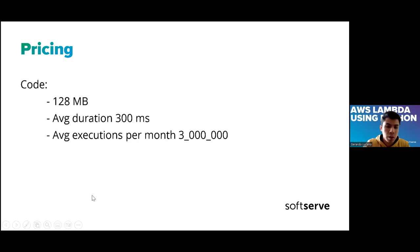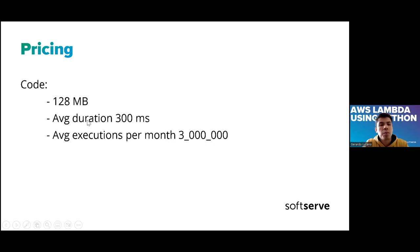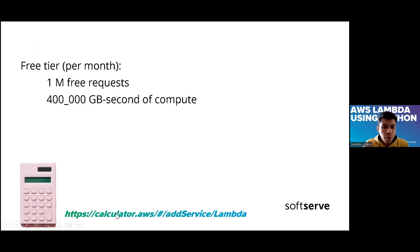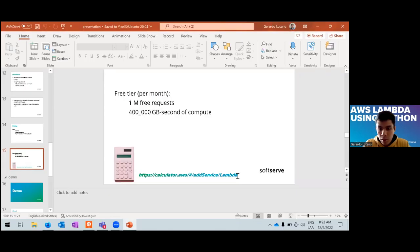Let's see the pricing. We want to make an example deploying code with 128 megabytes of size. Our code runs an average duration of 300 milliseconds, and our executions per month average a large number. We can use the AWS pricing calculator to work through this example — I'm going to share the link in the chat.